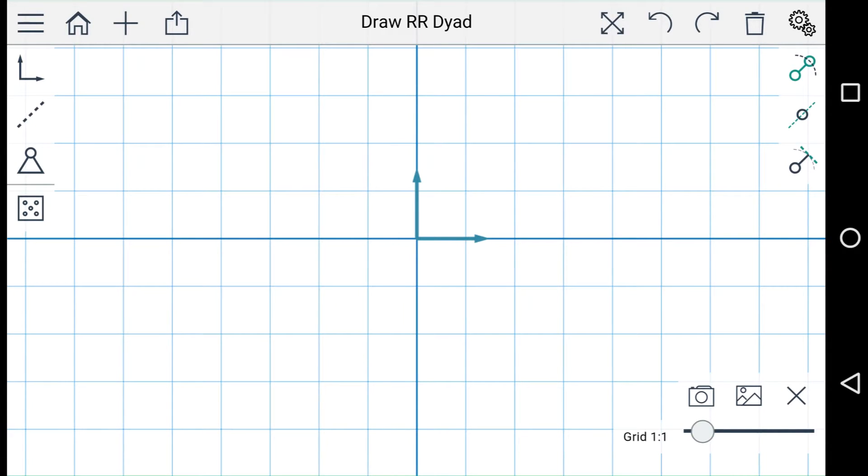From top to bottom, these buttons will allow you to add an RR dyad, a PR dyad, or an RP dyad.